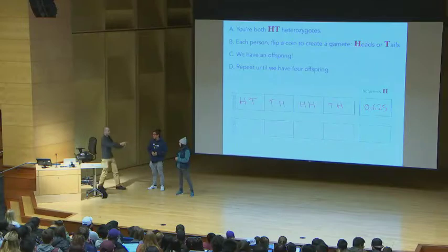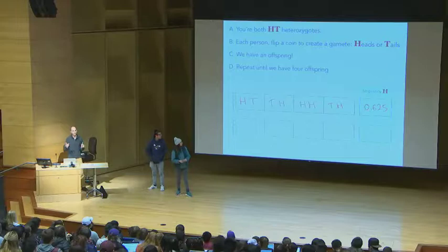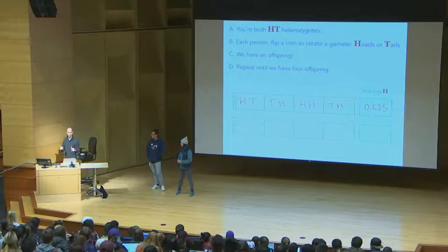So the starting generation was 50% H. The next generation was 62.5% H, which is not 50%. So the question, is this evolution? I want you to chat with your neighbors about is this evolution.